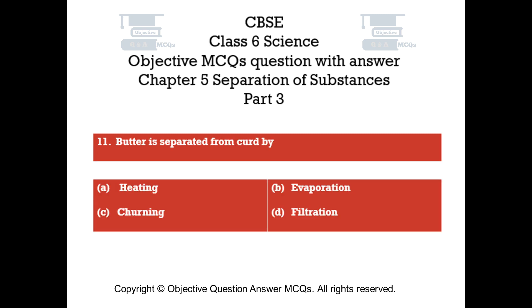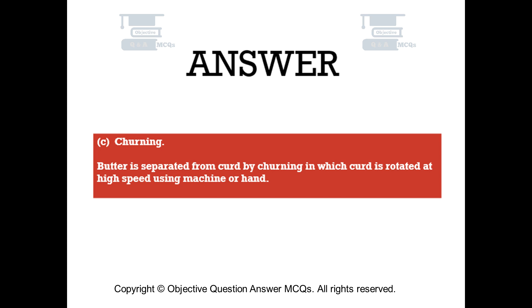Question number 11. Butter is separated from curd by. Option A: Heating. Option B: Evaporation. Option C: Churning. Option D: Filtration. The right answer is Option C — Churning. Butter is separated from curd by churning, in which curd is rotated at high speed using a machine or by hand.